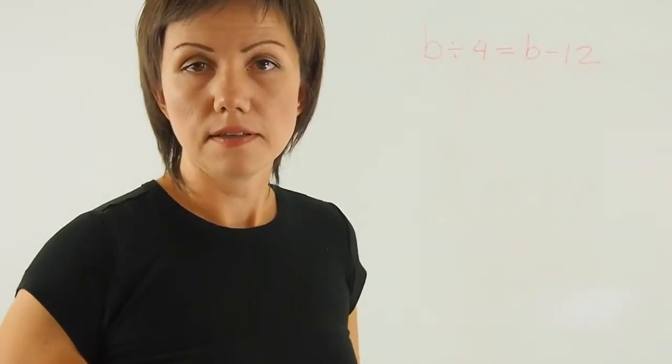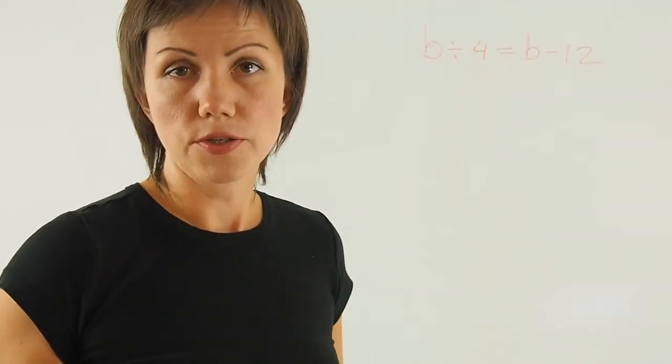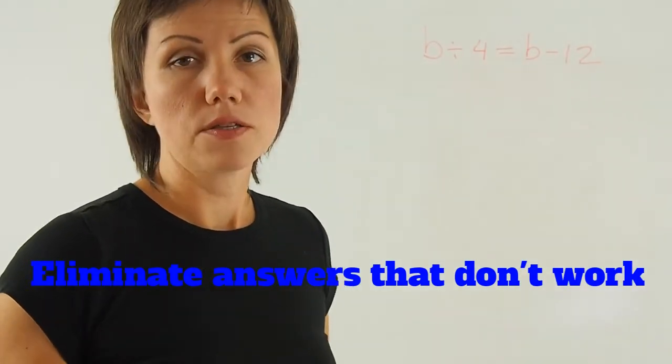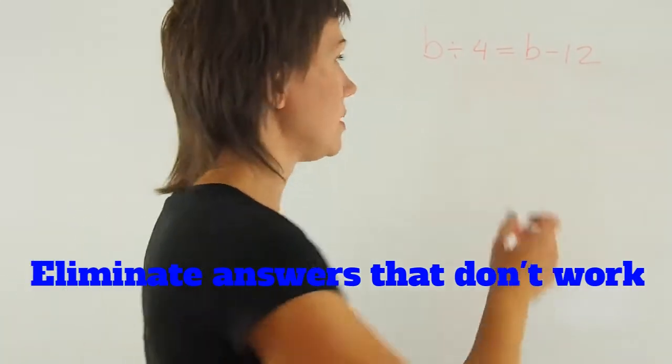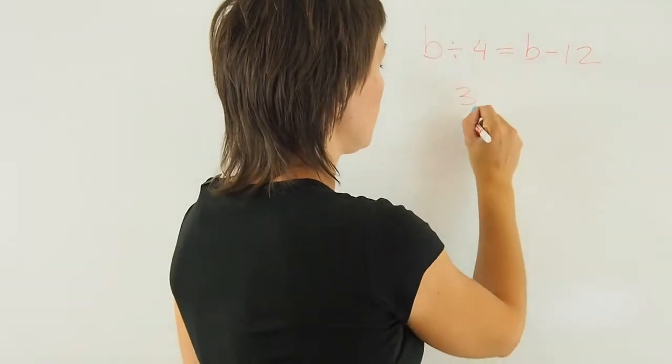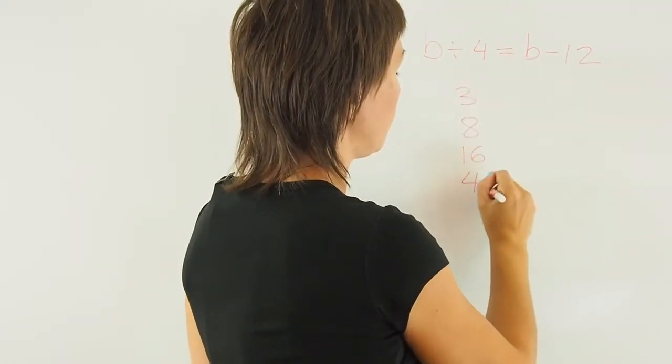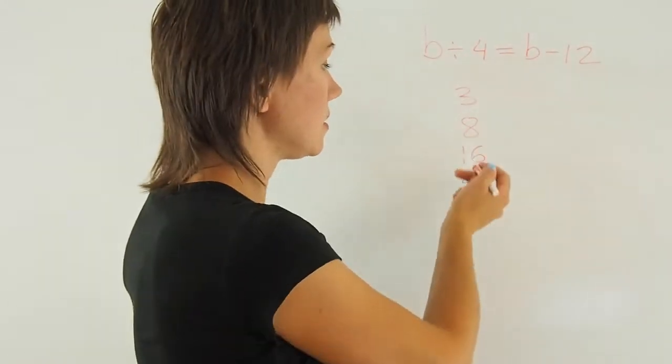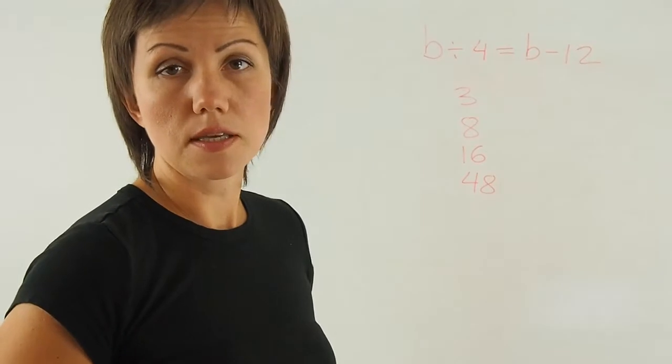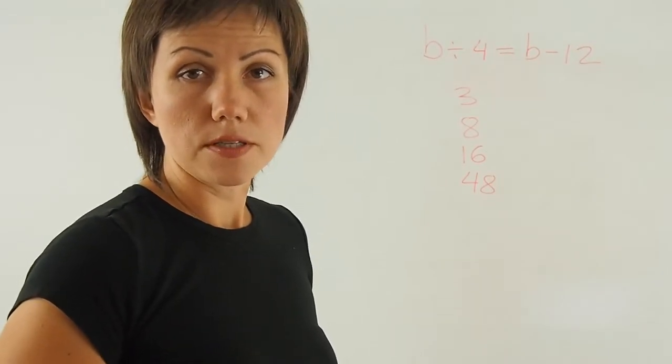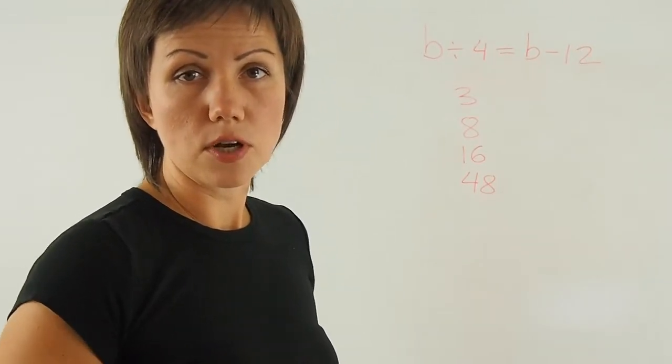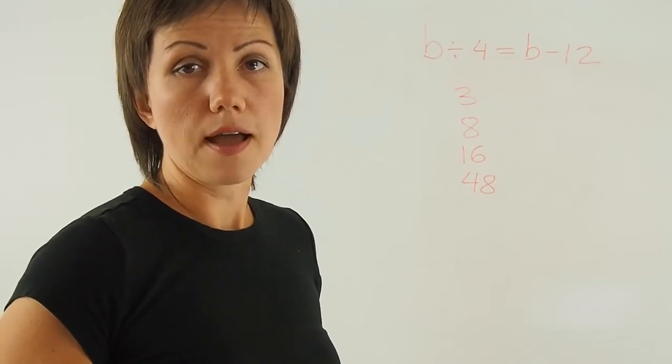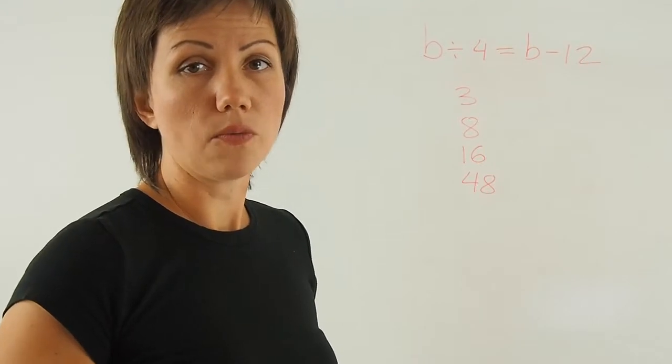Once you're given the possible answers, you can use the process of elimination here. So your possible answers for b are 3, 8, 16, and 48. So what you can do is you can test each one of them to see if it works, and if it doesn't, then you just cross it off, you cross it out, you don't need it anymore, you know it doesn't work, and you use only the one that works.